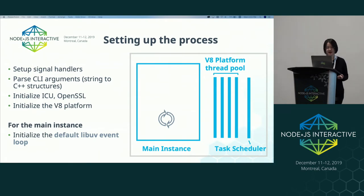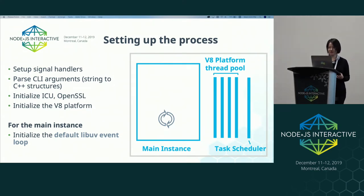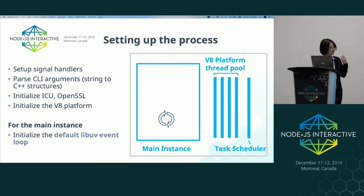When initializing the main instance, first we initialize the LibUV event loop on the main thread, but we'll only add handles to it later when we initialize the environment. The main instance simply uses the default LibUV event loop.